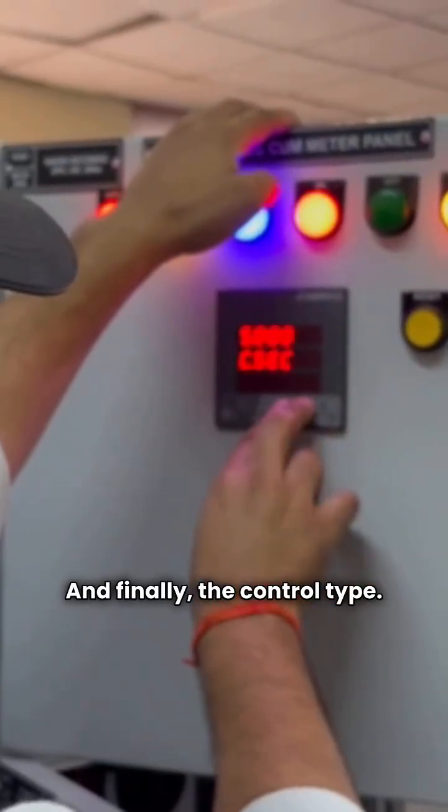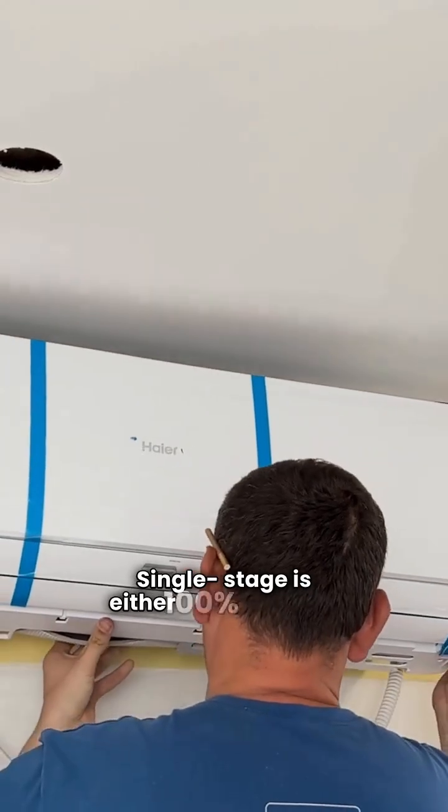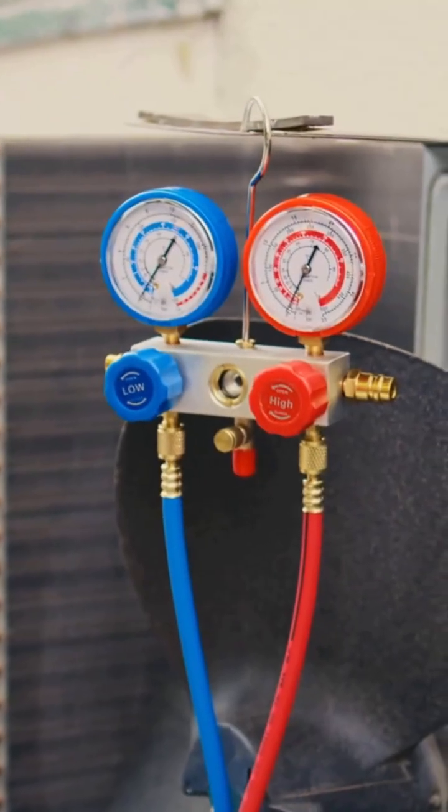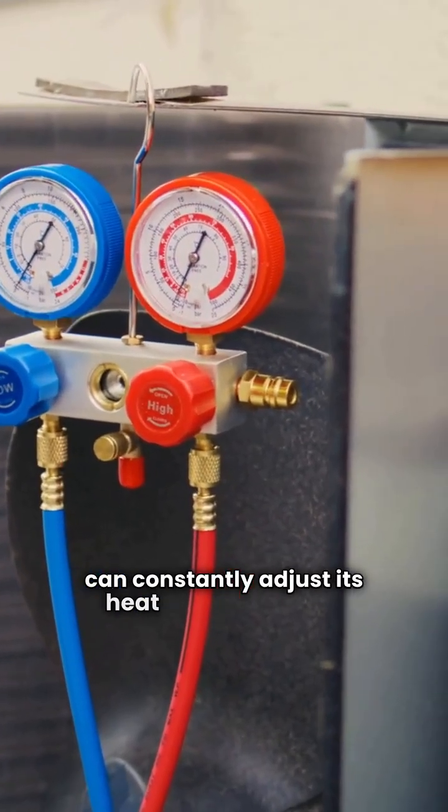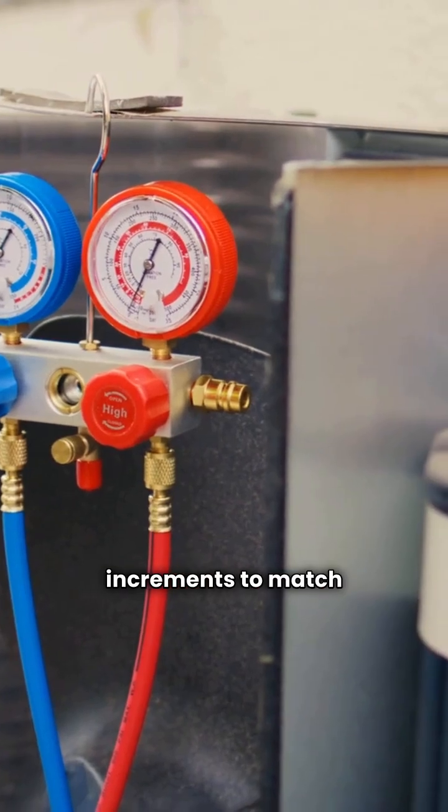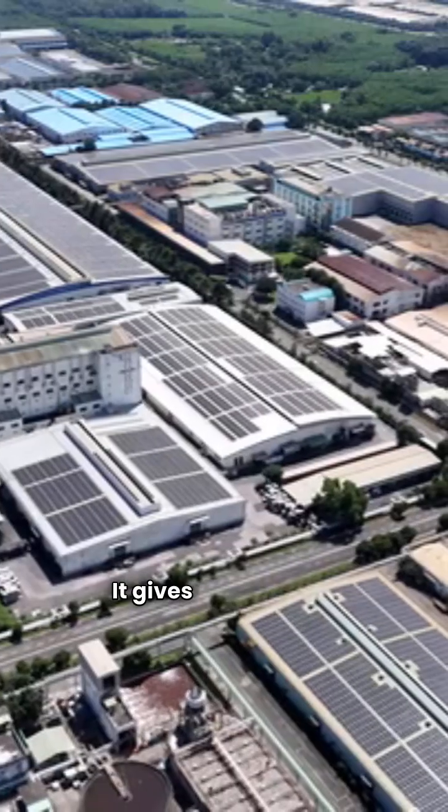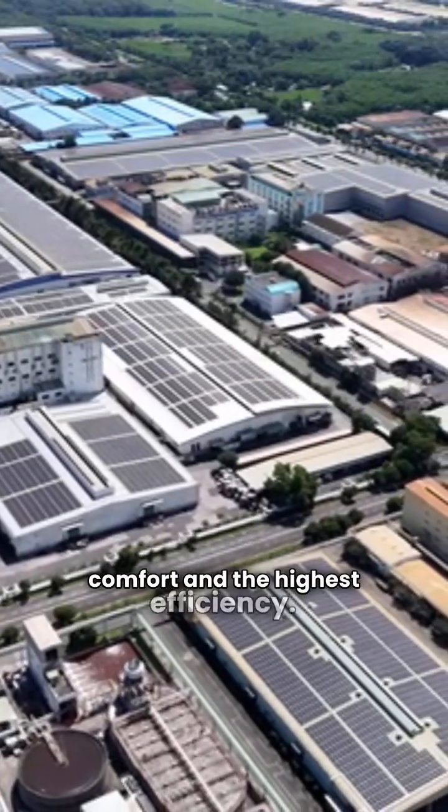And then finally, the control type. Single stage is either 100% on or off. Modulating control is the high-end stuff. It can constantly adjust its heat output in small increments to match your needs perfectly. It gives you the best comfort and the highest efficiency.